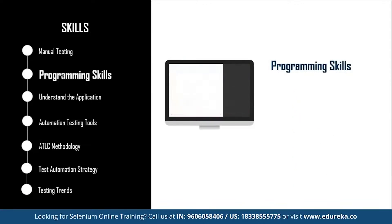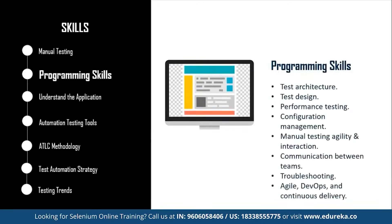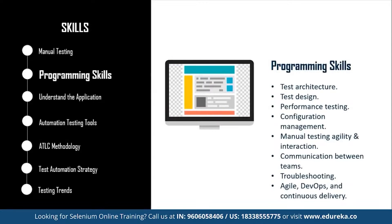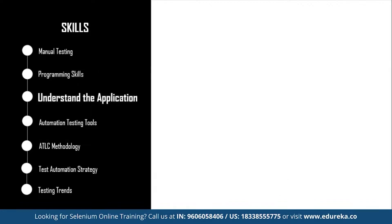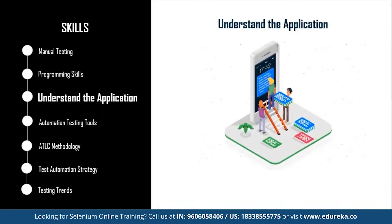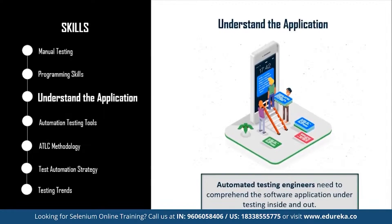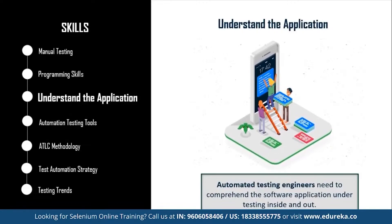There are also technical skills a manual tester should master to become a great automation testing engineer, such as test architecture, test design, performance testing, configuration management, manual testing agility and interaction, communication between teams, troubleshooting, and agile DevOps and continuous delivery. The combination of all these skills can help you transition to automated testing easily. Next, you need to understand the application. Common details every automation tester must know include which programming languages were used, what platform the application is built on, which databases are involved, and whether there are web services or APIs connected to different parts of the system.